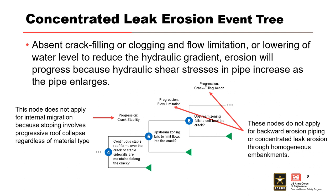For concentrated leak erosion, absent crack filling or clogging and flow limitation, or lowering of the water level to reduce the hydraulic gradient, erosion will progress because hydraulic shear stresses in the pipe increase as the pipe enlarges. Thus, the likelihood of progression for concentrated leak erosion through the embankment usually considers three nodes: holding a roof, upstream flow limitation, and crack filling action. Two are related to the mechanical condition, and one is related to the hydraulic condition. All three nodes appear in some generic internal erosion event trees, but they are usually worded to only apply to concentrated leak erosion in zoned embankments.